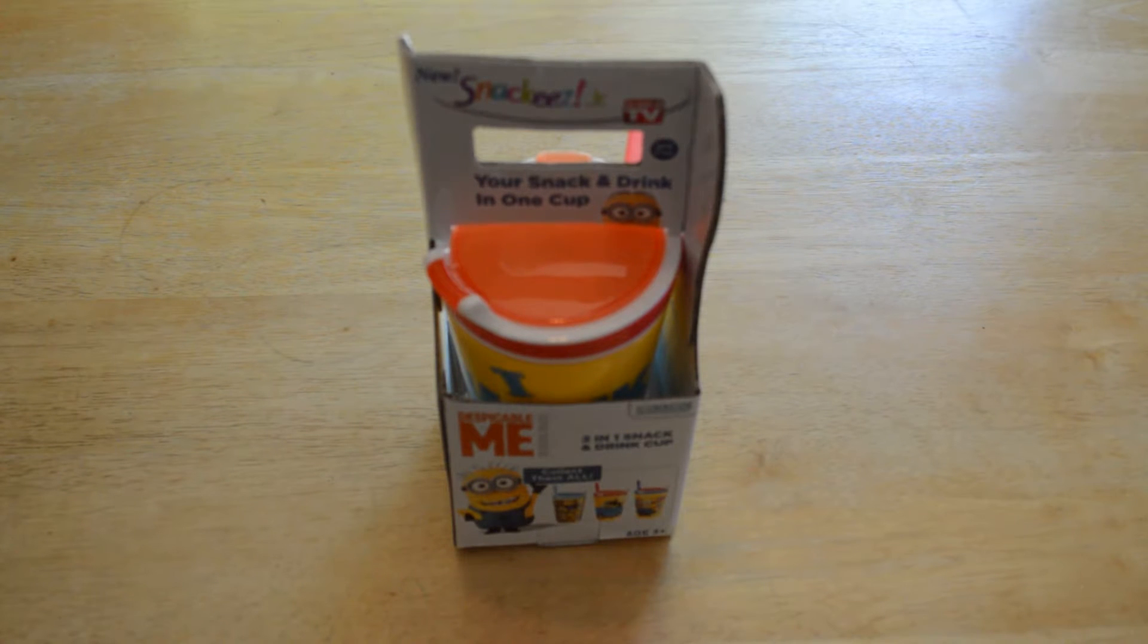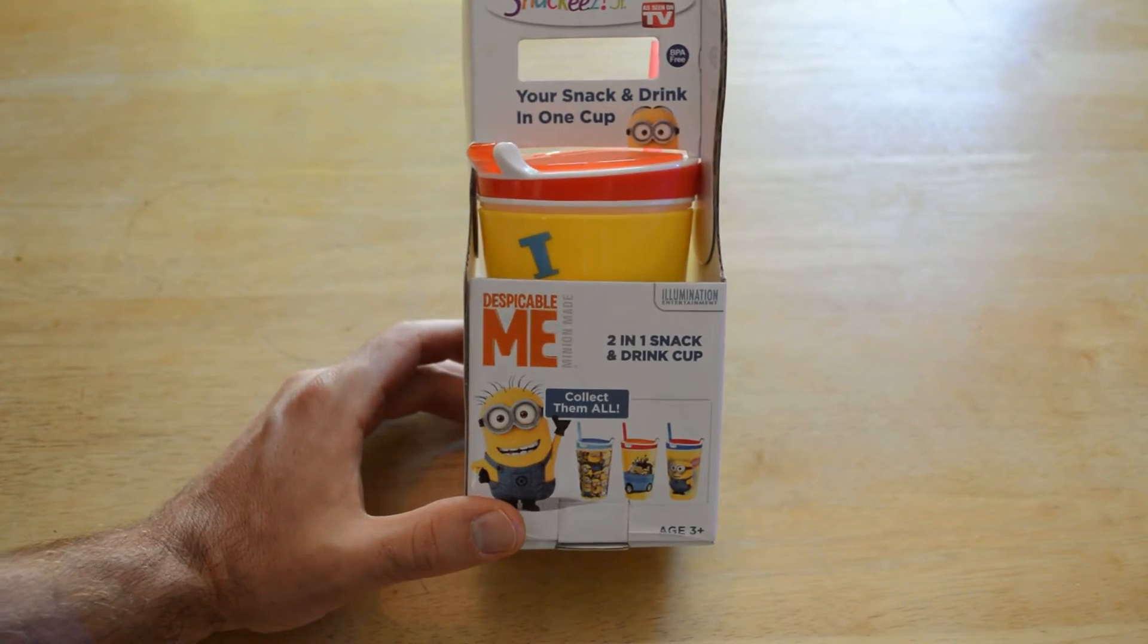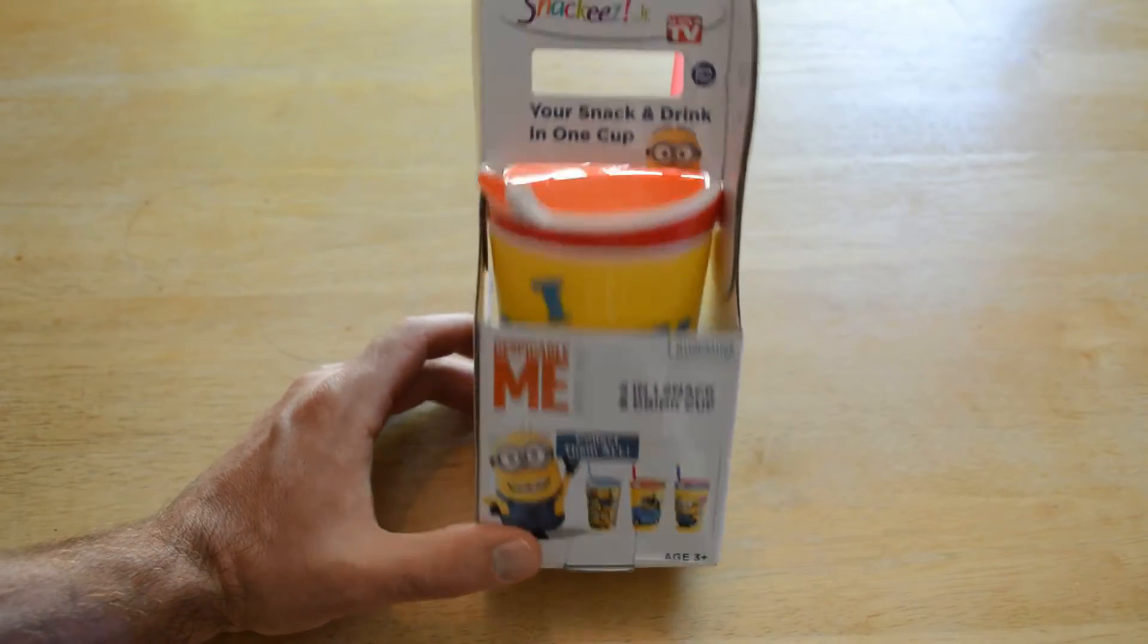Hey, what's going on everyone? Welcome to the Nine Miles Review of the As Seen On TV product. It's the new Snackies Junior - your snack and drink in one cup. I guess it's the Despicable Me version. Two in one drink and snack cup.